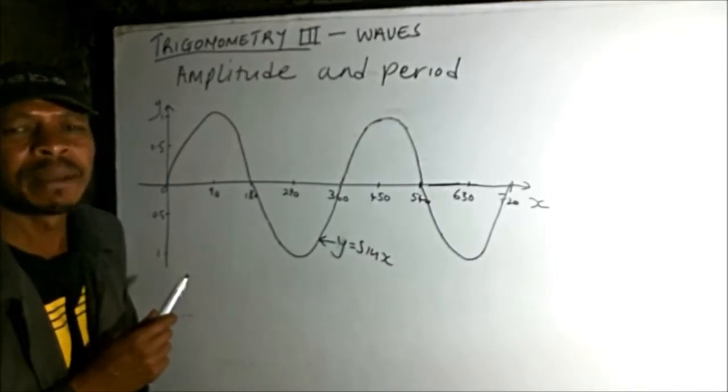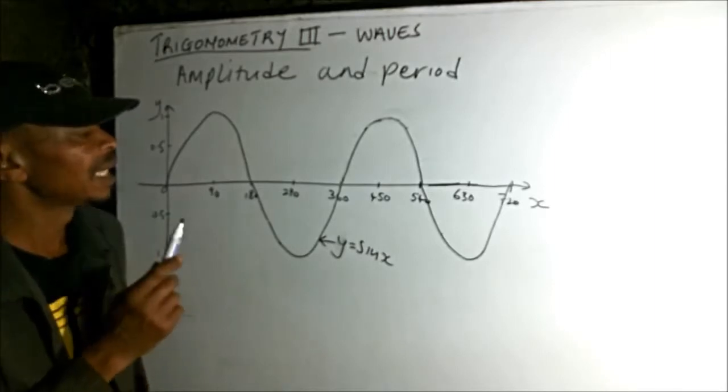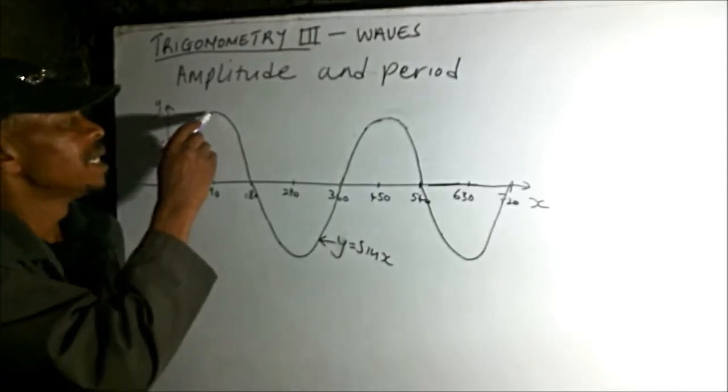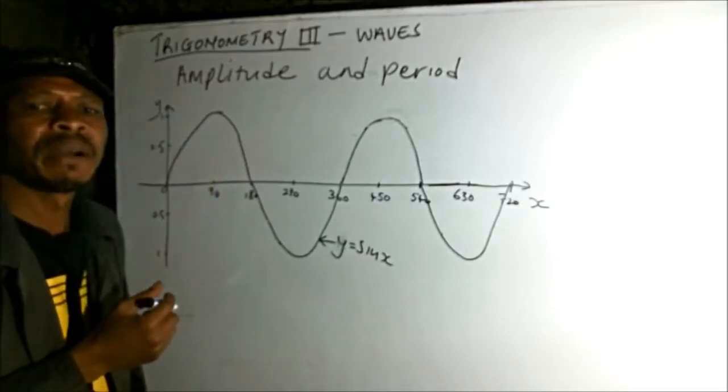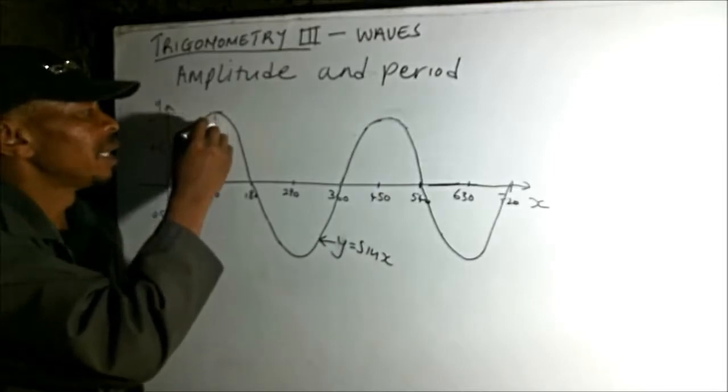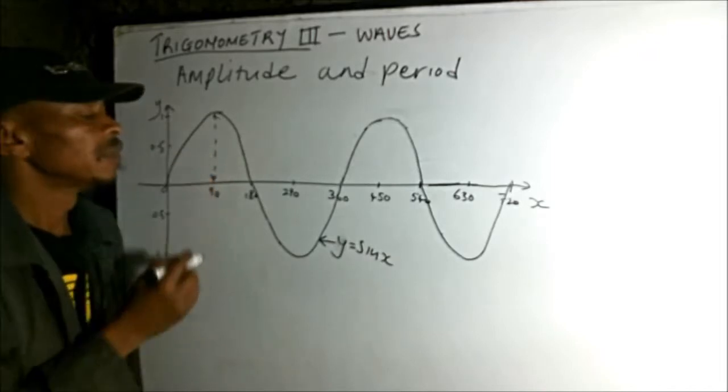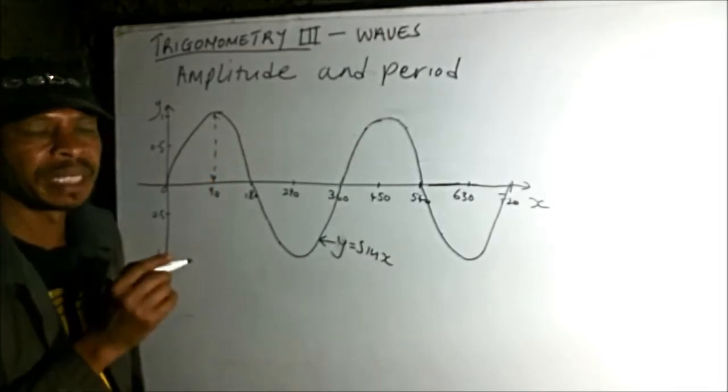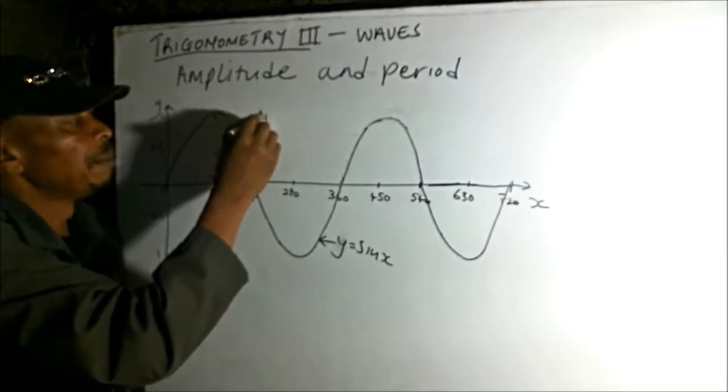Amplitude is the maximum displacement from the x-axis. You can see our wave here, the maximum point is 1. So this is actually the amplitude - the maximum displacement.